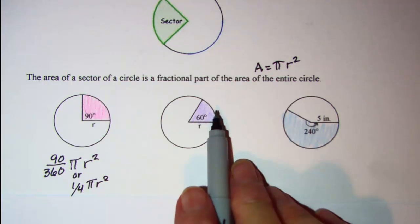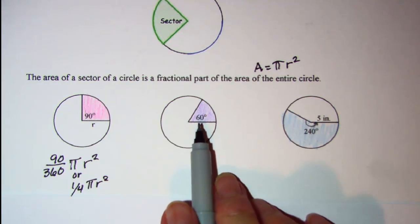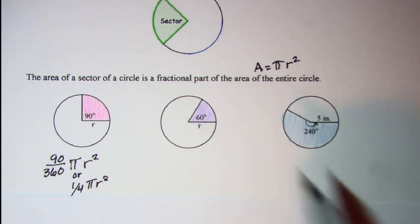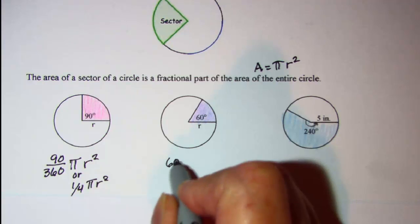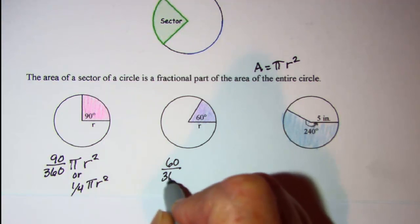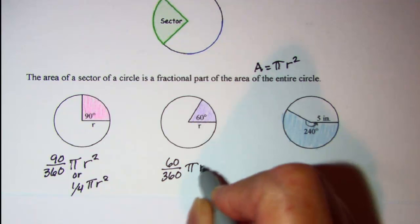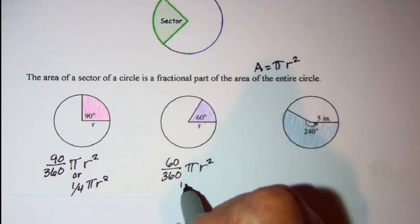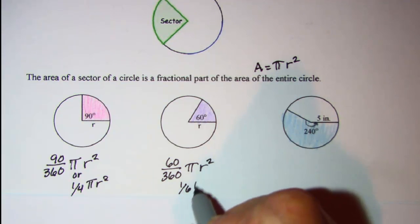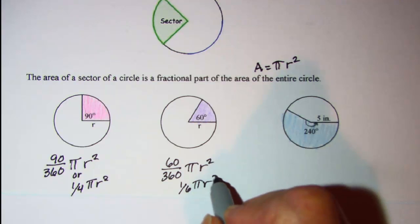So for this sector here the central angle measures 60 degrees, the radius is still r, so my fractional part of the circle will be 60 over 360 pi r squared. Now 60 over 360 is the same as 1 sixth, so we could write that as 1 sixth pi r squared.